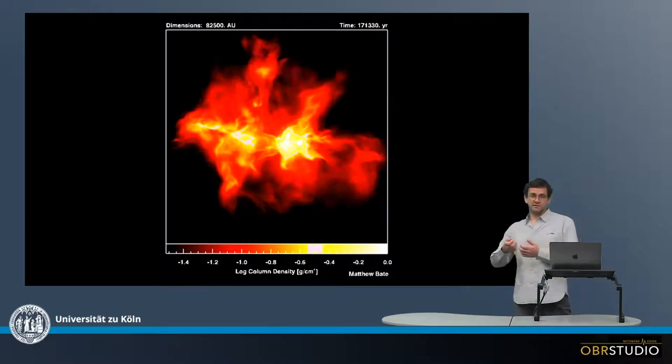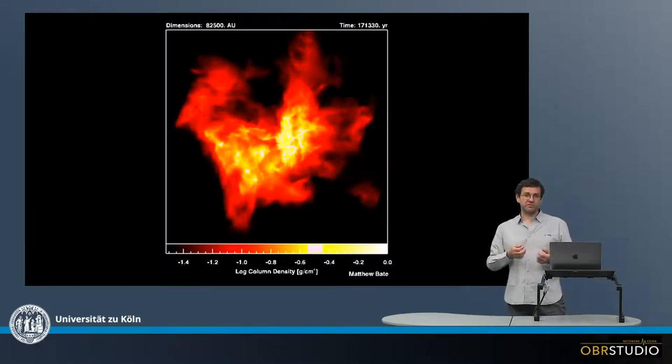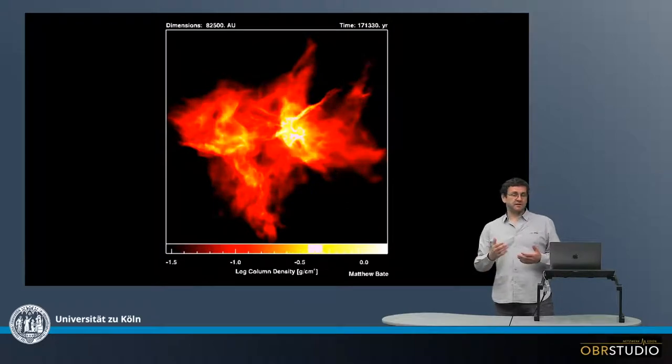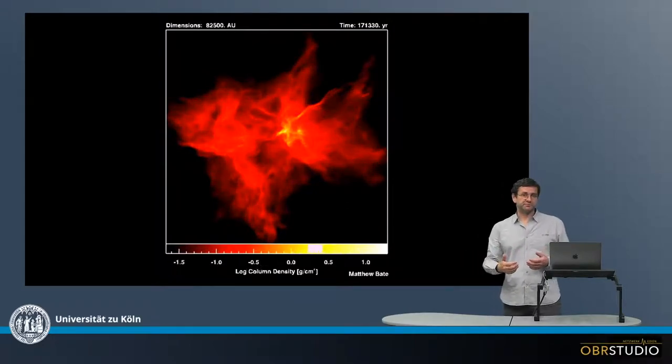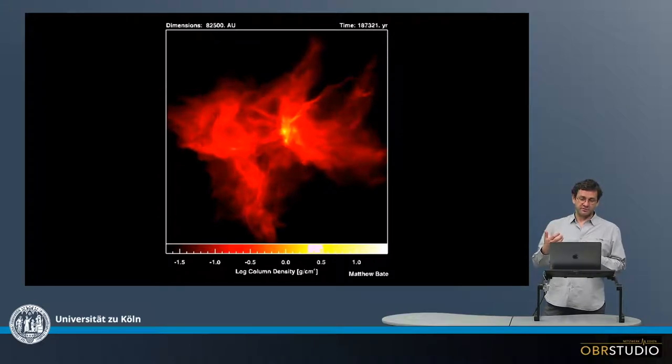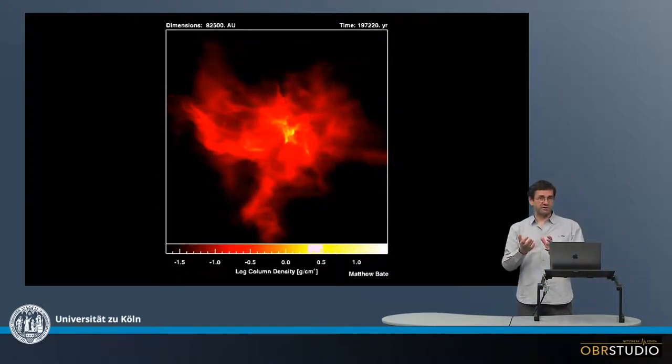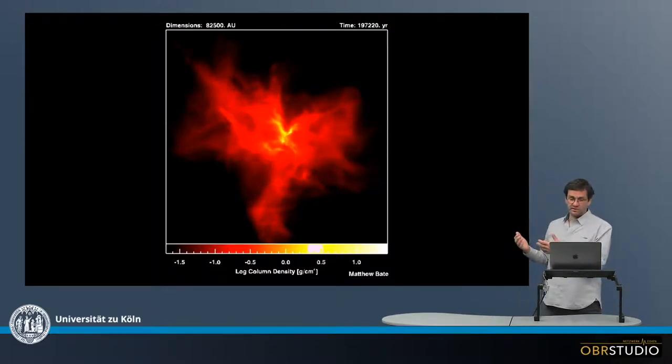And at a certain density threshold, a star is forming. Now you'll also see that the density scale is continuously changing because the density is increasing massively. And then we can nicely see the entire structure of this molecular cloud, which is rotating all the time.